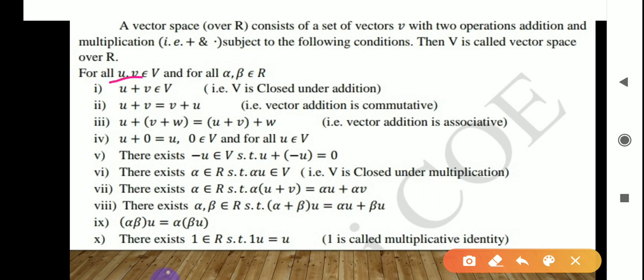Now we will see each of the 10 conditions one by one. Let U, V be elements of V, and let α, β belong to R — so α and β are scalars, and U and V are vectors. The first property is the closure property: U + V belongs to V, or equivalently, V is closed under addition. The second property is that vector addition is commutative: U + V = V + U.